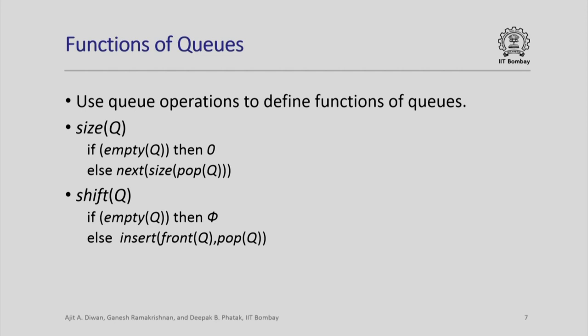Let us define some functions on queues using the queue operations themselves. One function is the size of a queue: if the queue is empty, the size is 0; otherwise, we return 1 plus the size of pop(queue). This says that popping the queue reduces its size by 1. Here is another operation called shift, which takes the element at the front of the queue and puts it at the back. If the queue is empty it does nothing; otherwise we call insert(front(queue), pop(queue)).